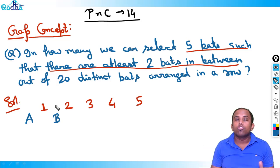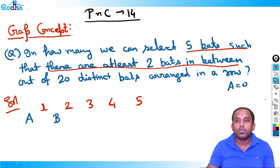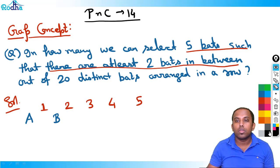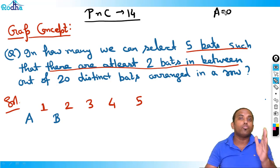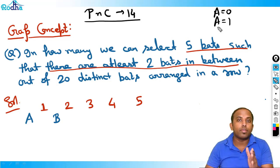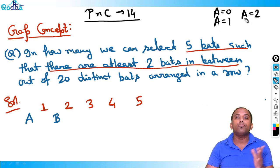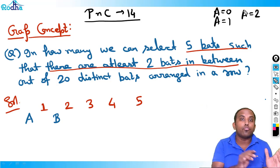If I pick the first bat, then A is 0 because number of bats before first bat is 0. If I pick the second bat, then A equals 1. If I pick the third bat, A equals 2. So A is the number of bats before you have picked that first bat.